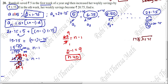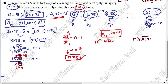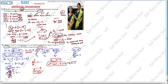So N equals 10, meaning it is the 10th term of the AP sequence. In the 10th week, her savings reach Rs. 20.75. Once you find the value of N, you can easily state the answer.